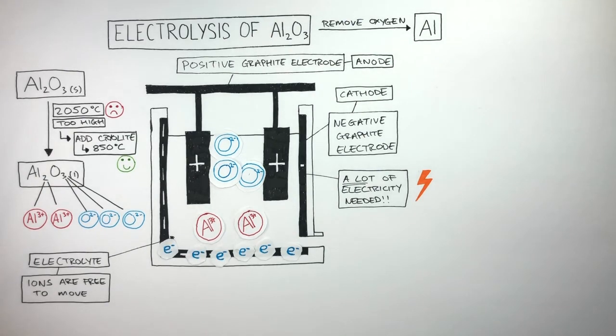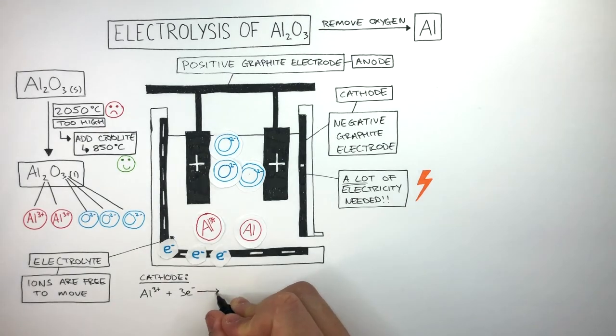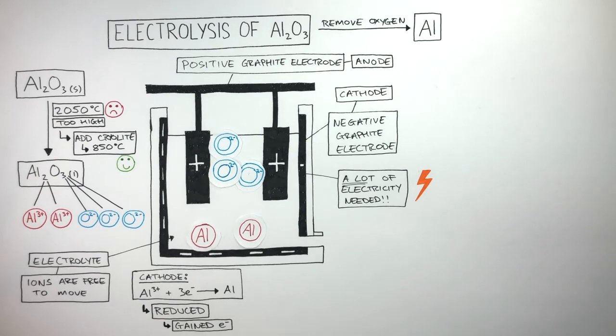Let's now focus on what happens at the electrodes in terms of how the ions gain and lose electrons. At the cathode, the Al3+ ion gains free electrons, so we write Al3+ plus free electrons, and this forms an aluminium atom. So then we write Al to show how Al3+ has gained free electrons to become an aluminium atom. We say it has been reduced as the aluminium cation has gained electrons. Reduction is the gain of electrons.